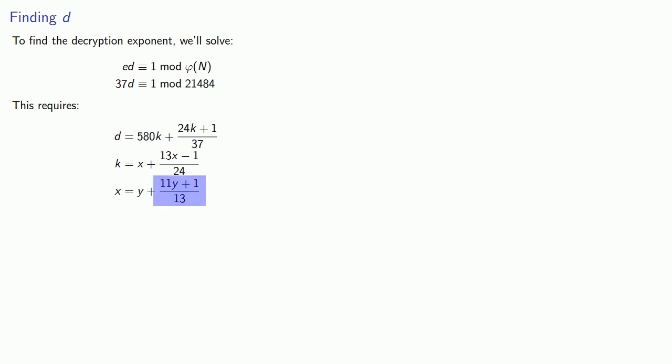Again, we want 11y plus 1 over 13 to be a whole number, so we'll call that z and solve for y, giving us another equation. We want 2z minus 1 over 11 to be a whole number, so we'll let that be w. Then we'll solve for z.